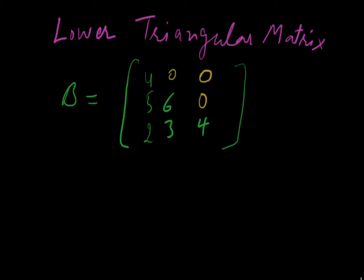If a matrix makes a triangle on the left side, then this matrix will be a lower triangular matrix.